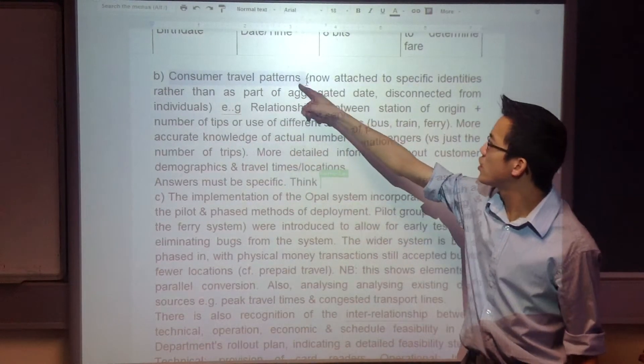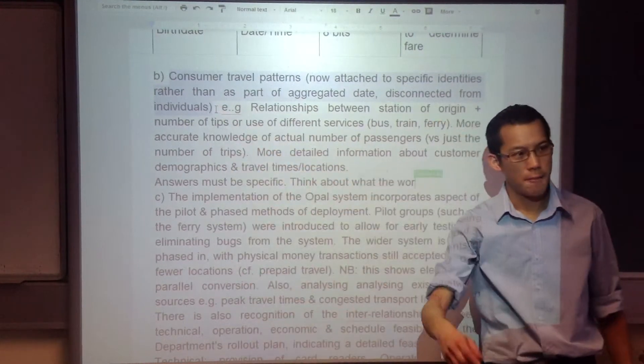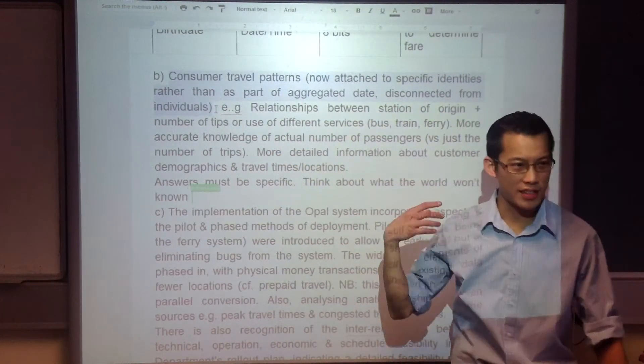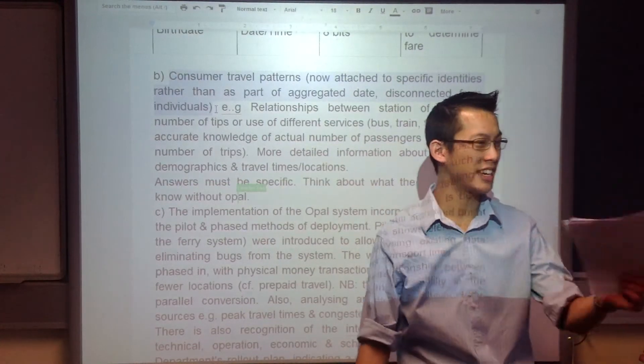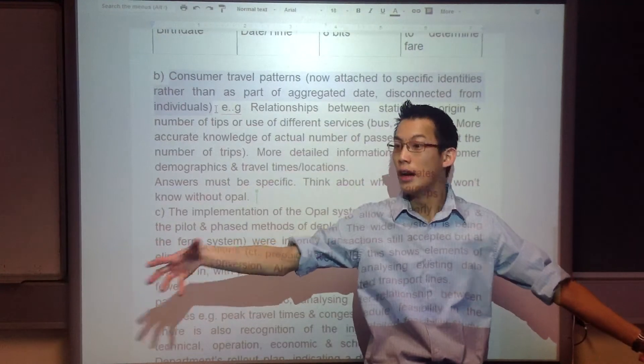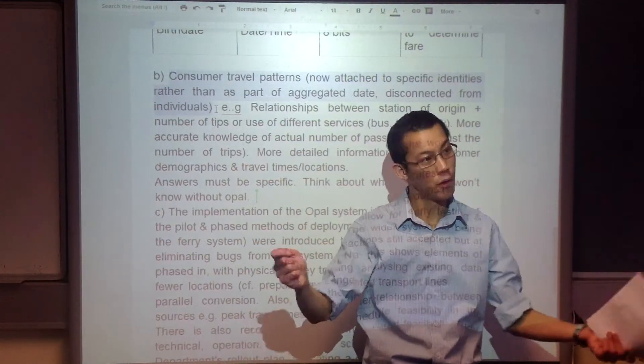This is the main one, consumer travel patterns, right? Because they're attached to a card. It's not like once I buy a ticket at one station and then I buy a ticket at another one, they're two completely different things. The Department of Transport doesn't know that it was the same person who bought both tickets, right?